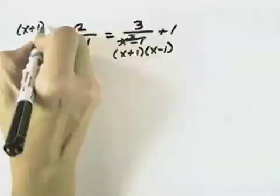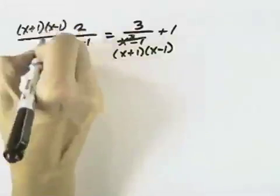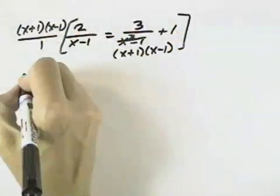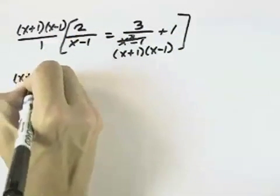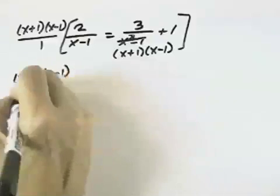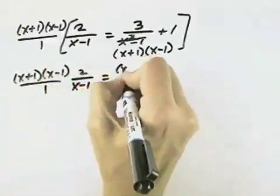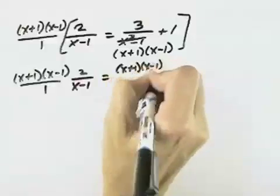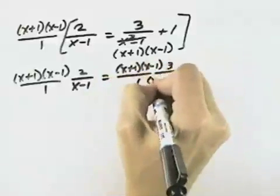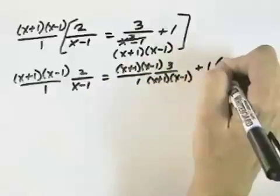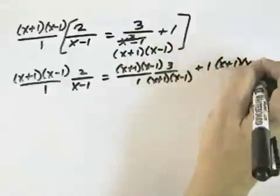That means I want to multiply my entire equation on both sides by x plus 1 times x minus 1, so those fractions will cancel out. That means I'll have x plus 1 times x minus 1 multiplied by the 2 over x minus 1, and also x plus 1 times x minus 1 multiplied by the 3 over x plus 1 times x minus 1, and finally plus the 1 times x plus 1 times x minus 1.